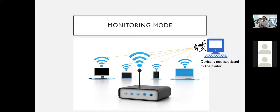The advantage of monitoring mode is you don't have to associate with any device, and you can still see the traffic — with no limit on the number of devices. The drawback is that once you are in monitoring mode, you cannot send or receive data, meaning you will be completely disconnected from the internet. You are only listening to everything happening in the air, so your own data communication turns off.